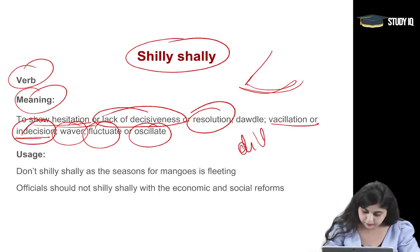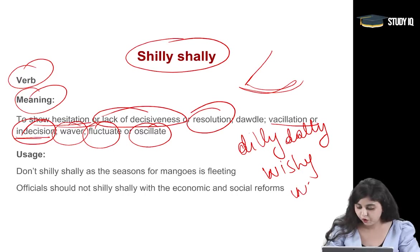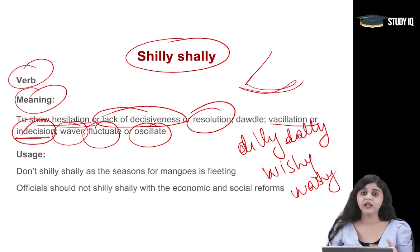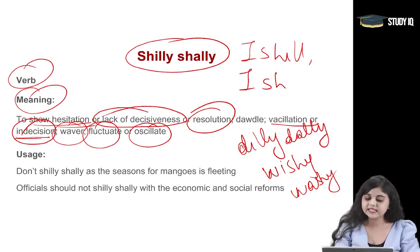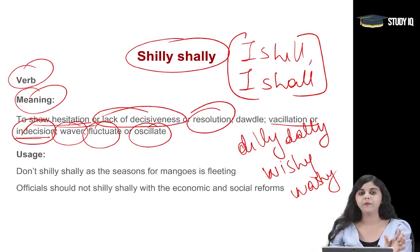This is also very similarly called dilly-dally or wishy-washy. Shillishalli comes from when we ask a question — 'I shall, I shall go there' — so 'I shall, I shall' was reduced and in usage became shillishalli, meaning when you are oscillating, when you are not able to come at a proper decision, when you are hesitating to come at a proper resolution.